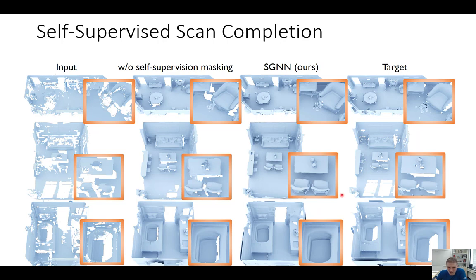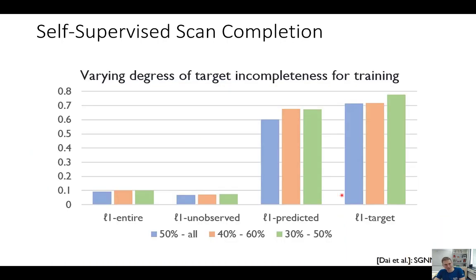Another ablation evaluates varying degrees of target incompleteness for training — different metrics: L1 on the entire thing, L1 observed, L1 predicted, L1 on target. Interestingly, going from 50% to all versus 30% to 50% doesn't matter so much — what this ratio is doesn't matter much as long as it's randomized. The varying degrees of target incompleteness for training don't really matter, which is a nice property. We were pretty happy with this method and got good results on geometry.